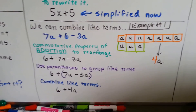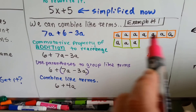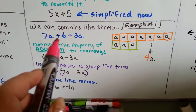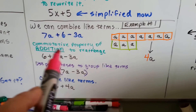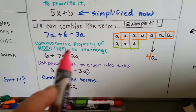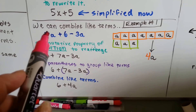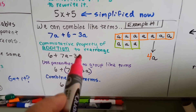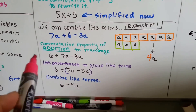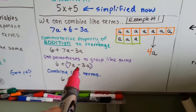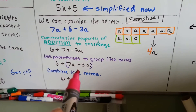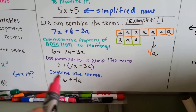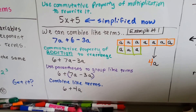This is example number one in the book — we can combine like terms. Here's the model: we've got 7a and we're going to take away 3a, leaving 4a. We've got 7a plus 6 minus 3a. We use the commutative property of addition to rearrange and put the a's together — so we take the 7a and put it with the 3a and shove the 6 forward. Then we put parentheses around the like terms, the 7a and 3a, and combine them. 7a minus 3a is 4a, so now we've got 6 plus 4a. We were able to simplify that one.